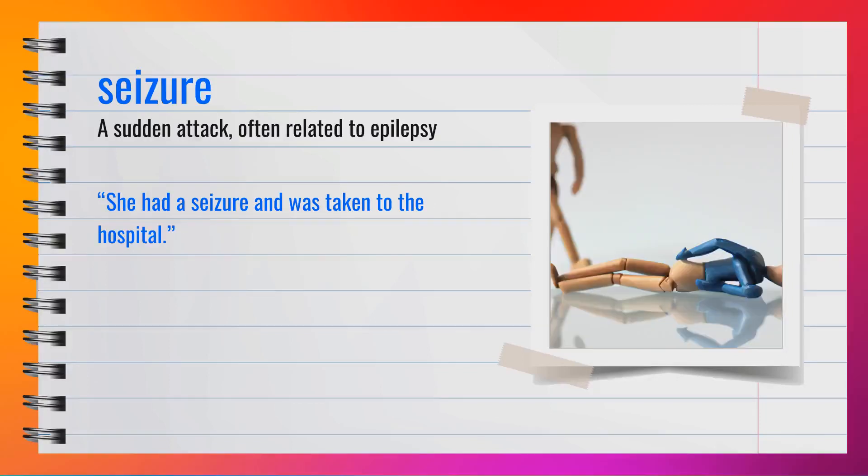The word seizure, spelled S-E-I-Z-U-R-E, is a noun pronounced 'seizure.' A seizure is a sudden attack often related to epilepsy. Synonyms include convulsion or spasm. For example, she had a seizure and was taken to the hospital. In summary, a seizure is a sudden attack often related to epilepsy.